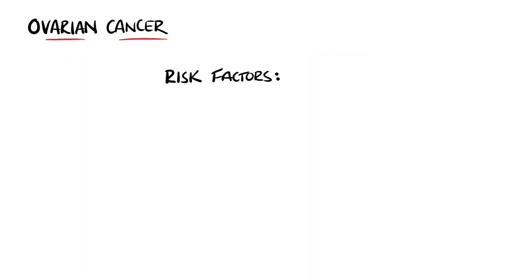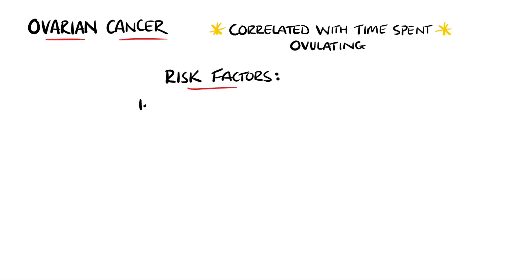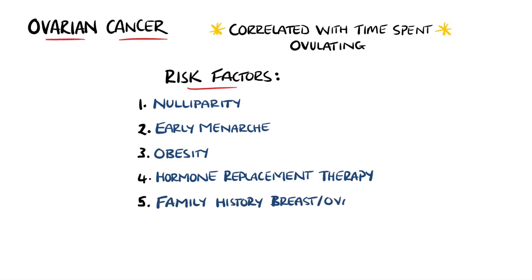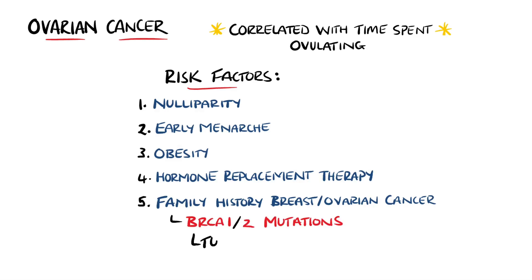Ovarian cancer risk is linked to how much time is spent ovulating. Therefore, nulliparous women with an earlier menarche generally have a higher risk. Obesity and hormone replacement therapy are also risk factors, as well as a family history of breast or ovarian cancer, which could indicate the presence of BRCA1 or BRCA2 gene mutations.